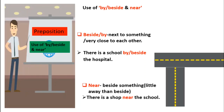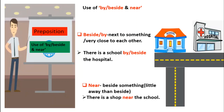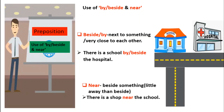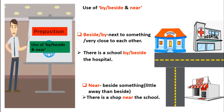Use of 'by', 'beside', and 'near'. 'By' or 'beside' is used to mean next to something, very close to each other. Like, there is a school by or beside the hospital. 'Near' is used to mean beside something but a little further away than 'beside'. Like, there is a shop near the school.